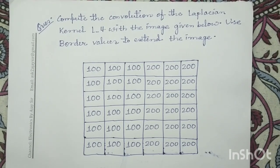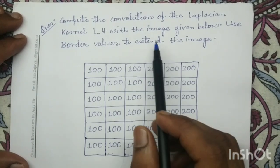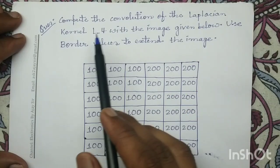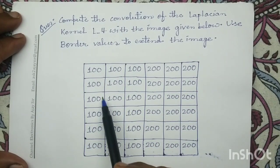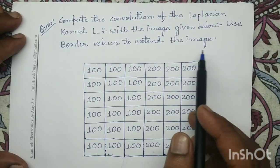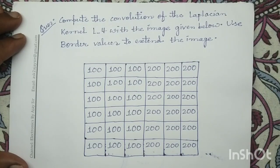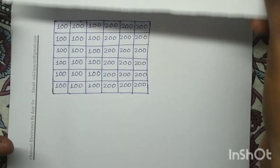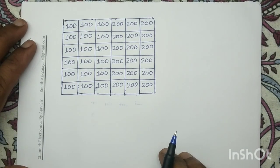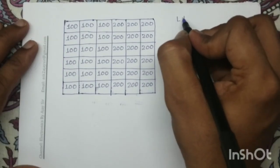Good morning. Today we will solve a numerical question on the Laplacian kernel. In this question, we have to perform the convolution operation of Laplacian kernel L4 with a given digital input image. We also need to consider the border pixel values in order to extend the image. Let us solve this question. This is the input digital image, and we have to perform the convolution operation using the Laplacian L4 kernel.